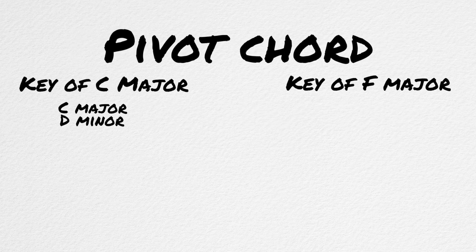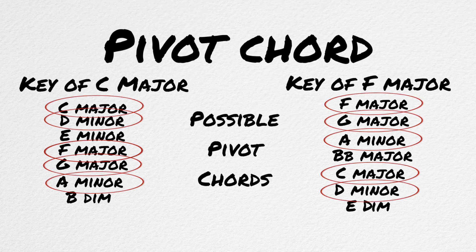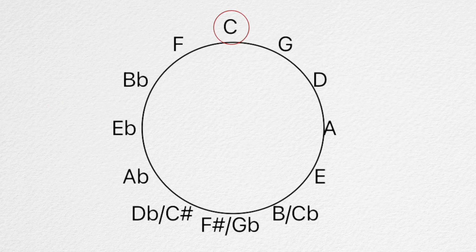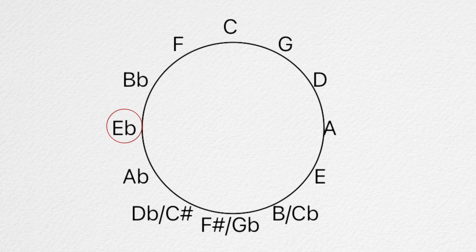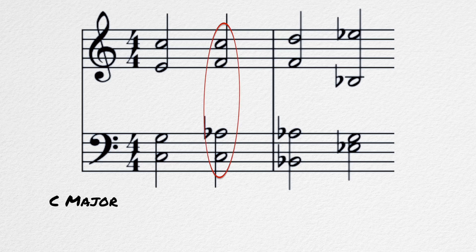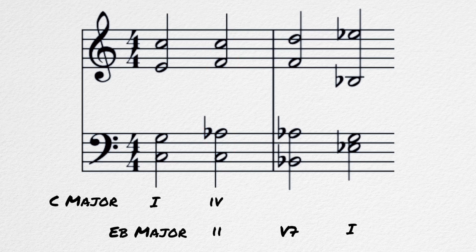Mode mixture can aid in modulation by acting as a pivot chord to help smooth the transition to distant keys. A pivot chord is a chord that belongs both to the key that you are in and the target key that you are going to, and it is used to help start the modulation process. The jump from C major to E flat major would be jarring to the ears, but it can be smoothed out with some mode mixture. In C major, we can use that F minor chord as a pivot chord to E flat major. In C, the F minor serves as the minor four chord, but in E flat it serves as the natural minor two chord. This chord then moves to the B flat seven dominant chord in the key of E flat and then tonicizes E flat major.